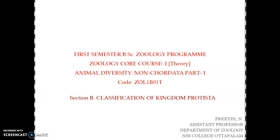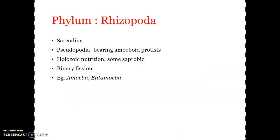Welcome back to the next presentation on Phylum under Kingdom Protista. This is Phylum Rhizopoda, otherwise referred to as Sarcodina. They include a group of pseudopodia-bearing amoeboid protists. A typical example is Amoeba. Rhizopodes have pseudopodia as a locomotor structure and they are all amoeboid in nature.